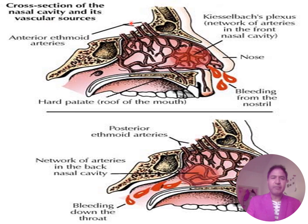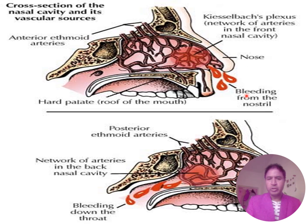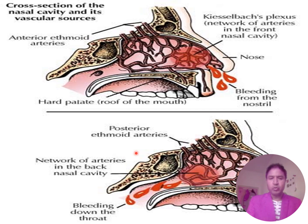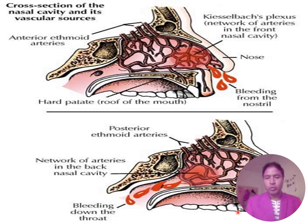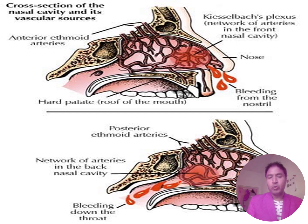Looking at the cross-section of the nasal cavity and its vascular supply: the anterior ethmoidal arteries and Kiesselbach's plexus form a network of arteries at the front of the nasal cavity. The posterior ethmoidal arteries form a network at the back. Anterior bleeding exits from the nostril; posterior bleeding goes down the throat.